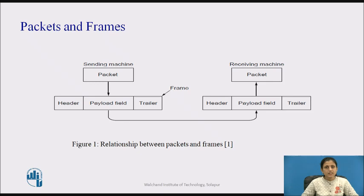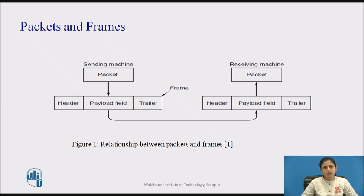The data link layer computes a short token called a checksum for each frame and includes the checksum in the frame when it is transmitted. When a frame arrives at the destination, the checksum is recomputed. If the newly computed checksum is different from the one contained in the frame, the data link layer knows that an error has occurred and takes steps to deal with it — for example, it may discard the bad frame.